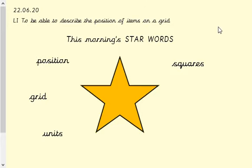Okay, well, we're starting a new topic this week. It's a one-week topic based on what we call position and direction. We're going to be moving into looking at coordinates. Our learning attention this morning is to be able to describe the position of items on a grid. Okay, so our star words this morning would be position, grid, units, and I would say squares will be important this morning as well.